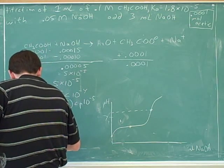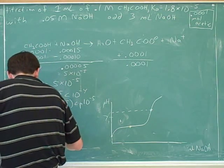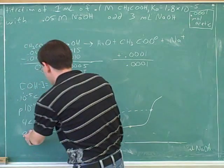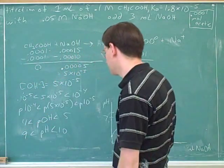What did you get as your answer? The pOH is between 9 and 10. 5 plus 9 is 14 and 4 plus 10 is 14.